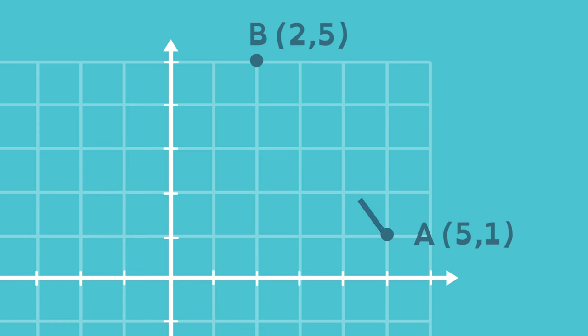To find the distance between A and B using the Pythagorean Theorem, she needs a right triangle. One way to make one is to go 3 spaces left and 4 spaces up.